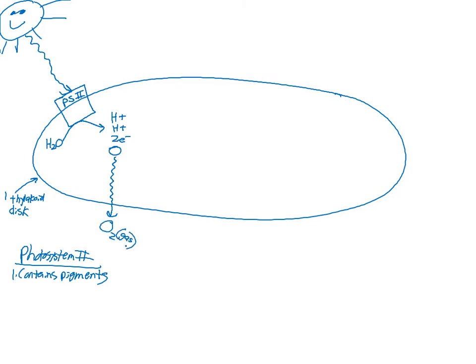The oxygen goes into the cell — either the palisade mesophyll cell or the spongy mesophyll cell, because we're inside a chloroplast. Then it will go into the air gaps of the spongy mesophyll and leave between the guard cells of the stoma. Now these electrons are full of energy — they're high energy, having all of that energy from the light that's been focused on them. What happens is these move to something called an electron transport chain.